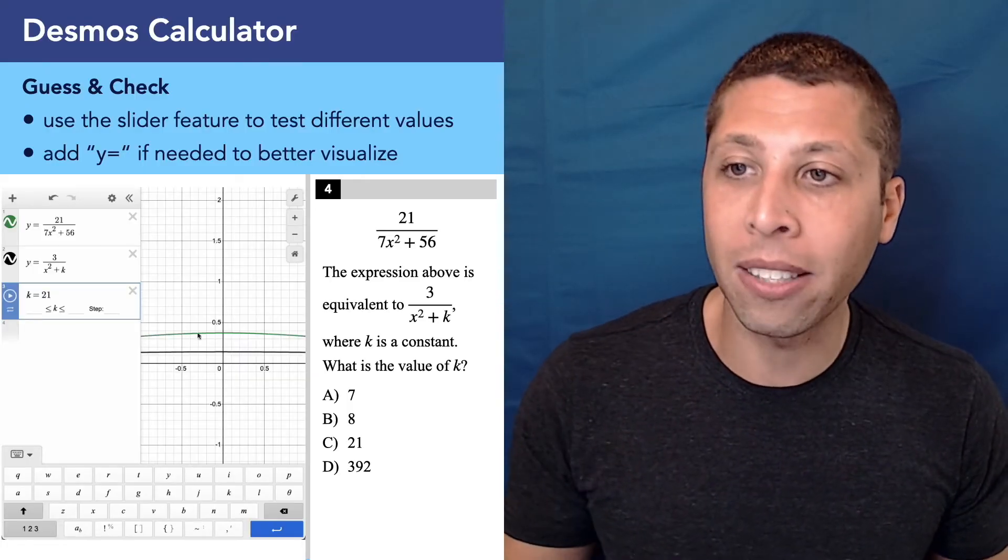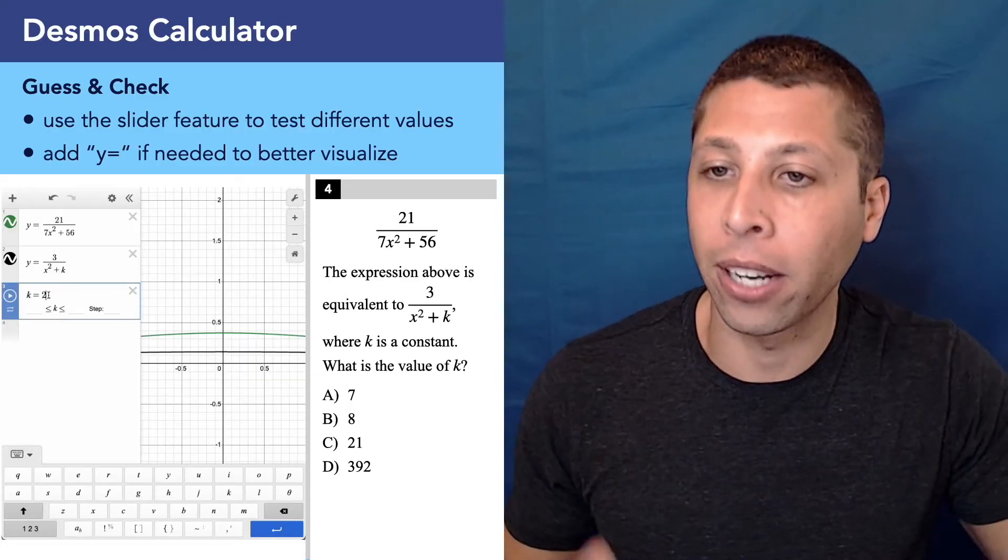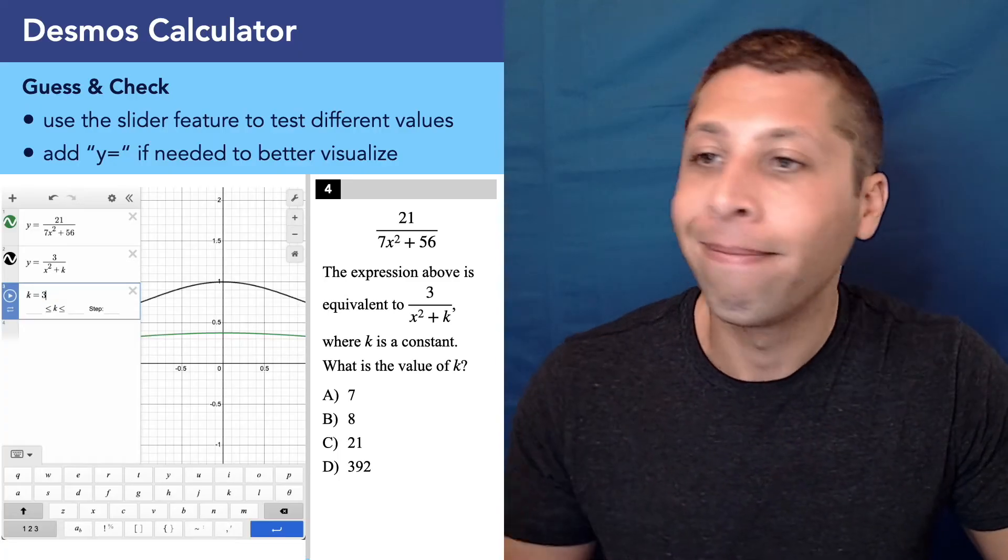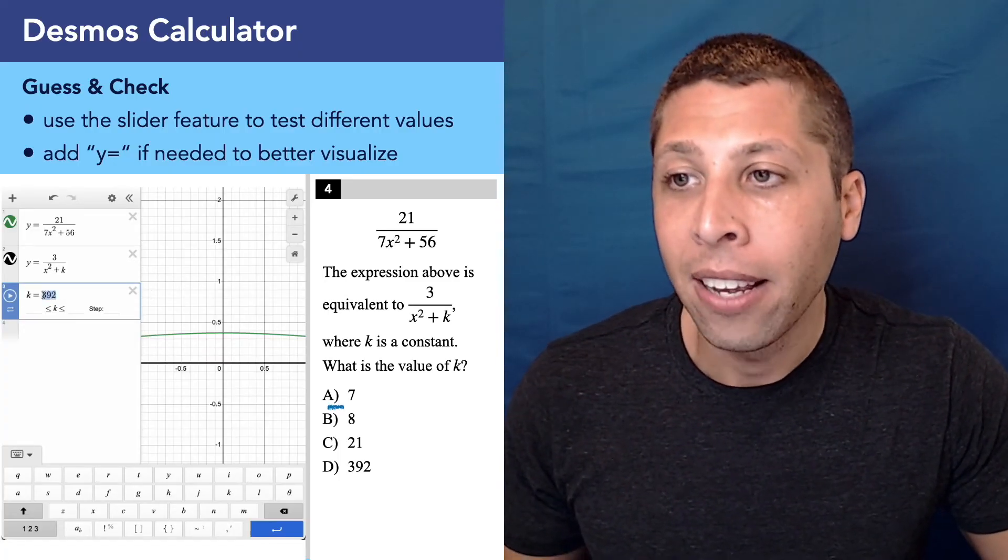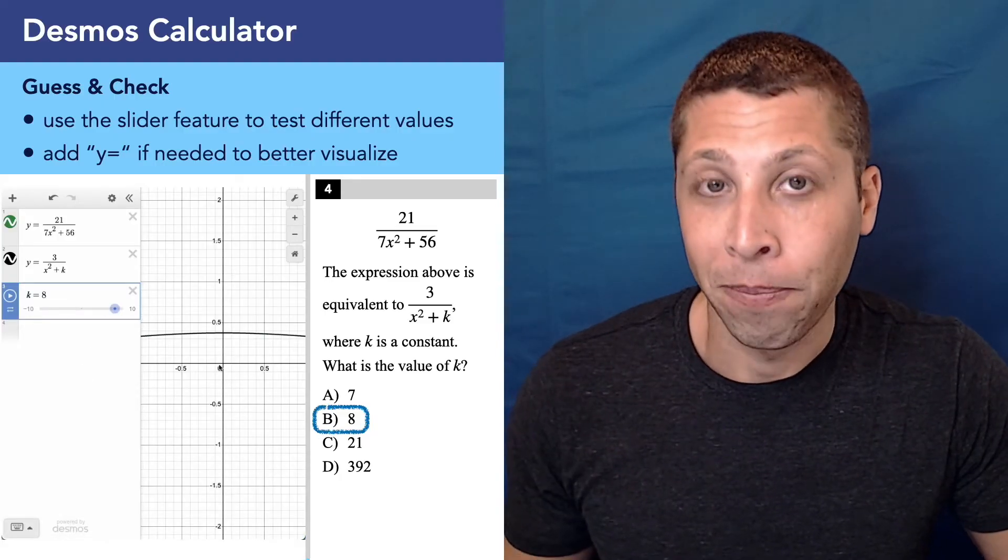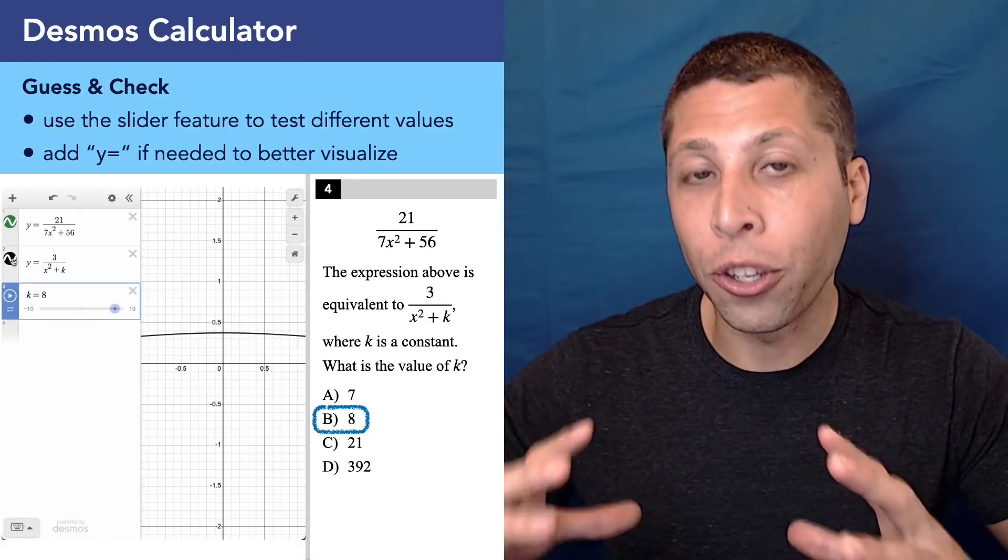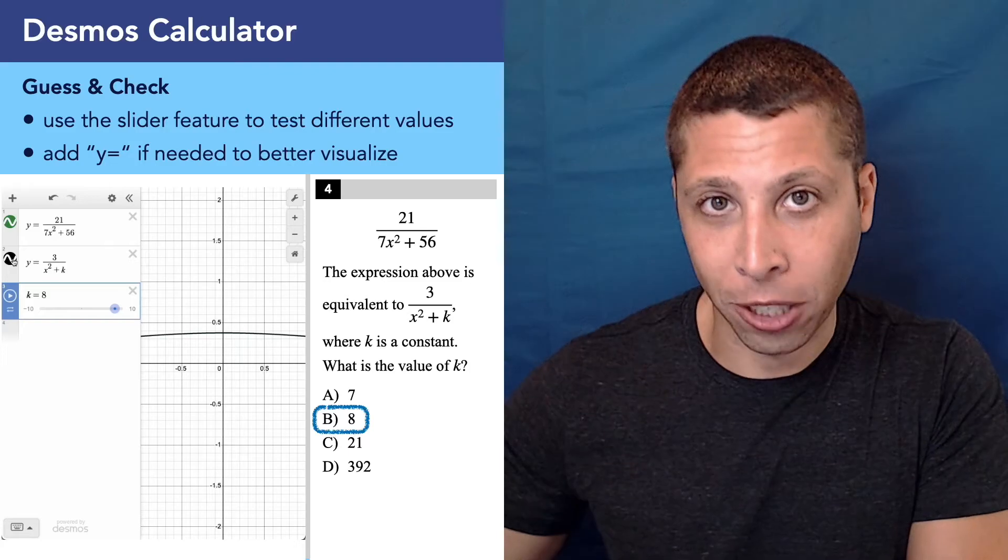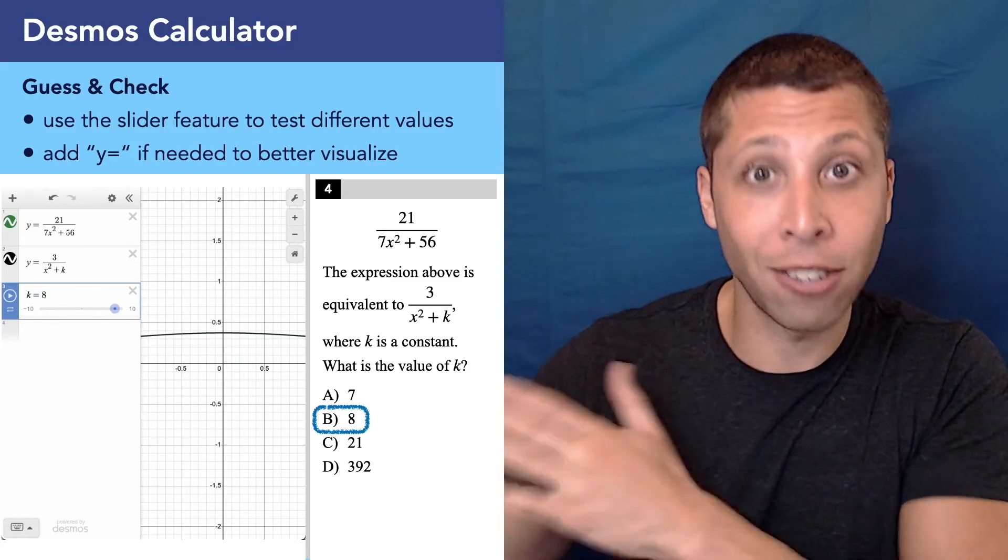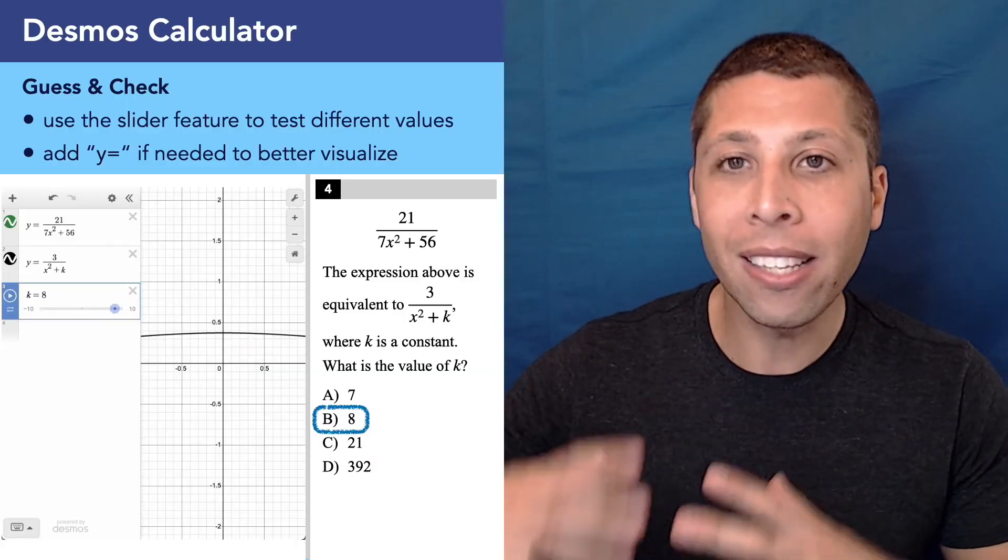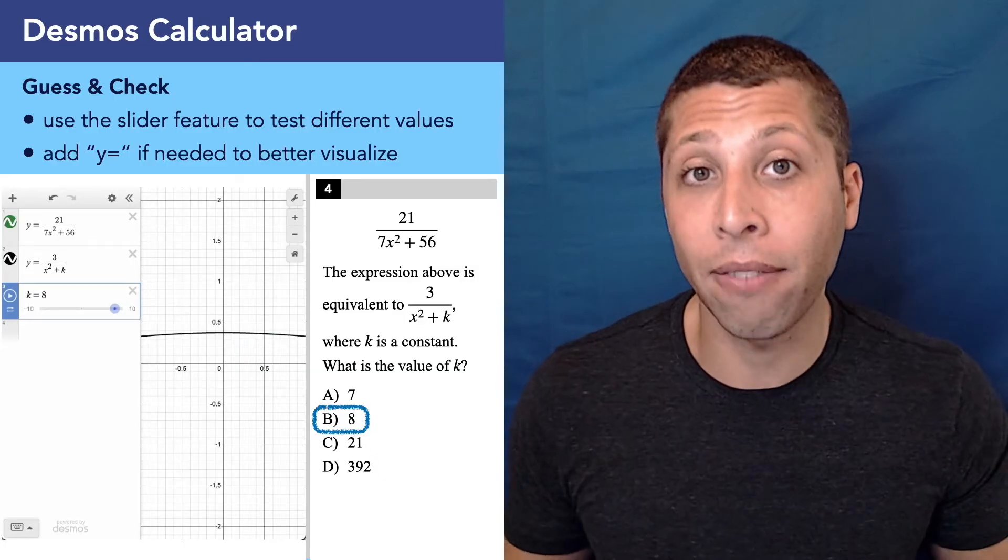If we try the other choices, we can see again, 21, they're different. 392, it's going to be different. And so we know now that eight is the answer because we were told to find an equivalent expression. And by playing with this value of k with the different guess and check answer choices that we have, we can see which one gives us the graph that's the same.